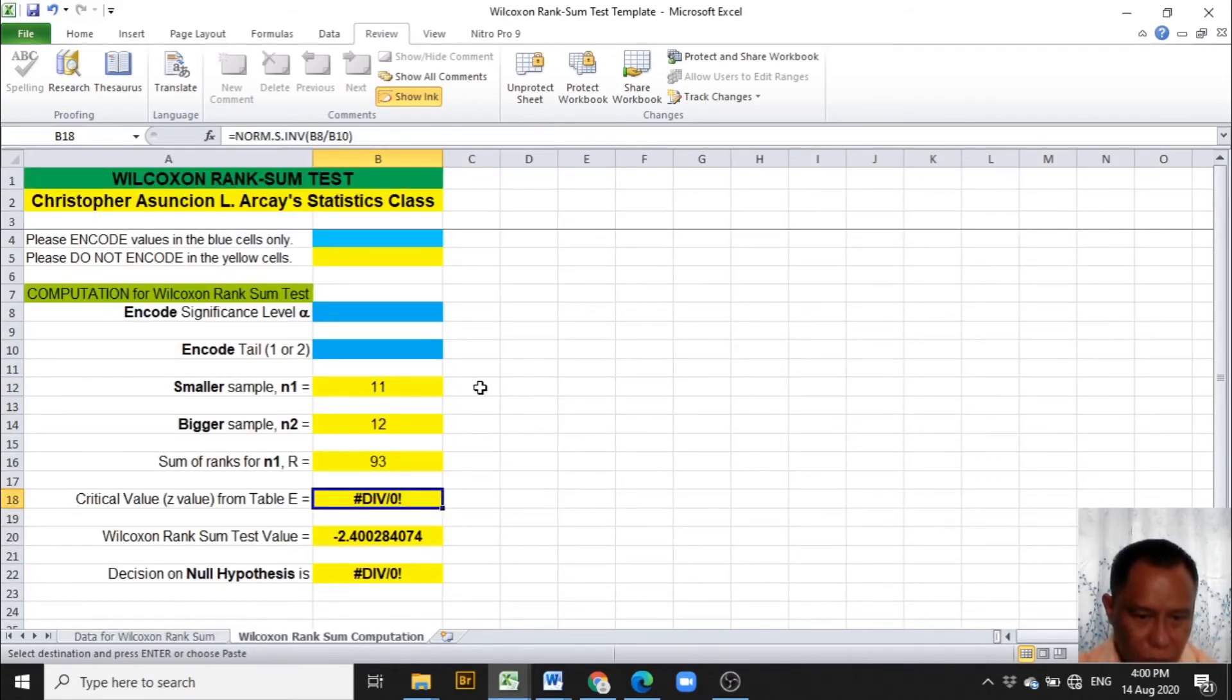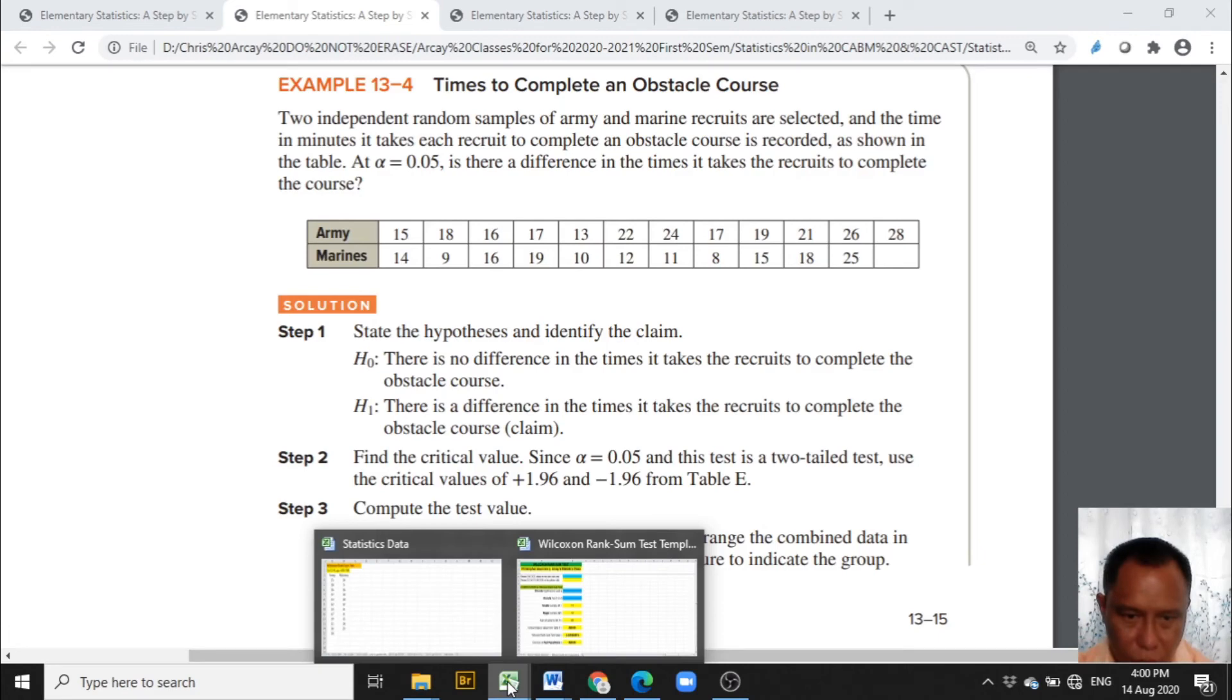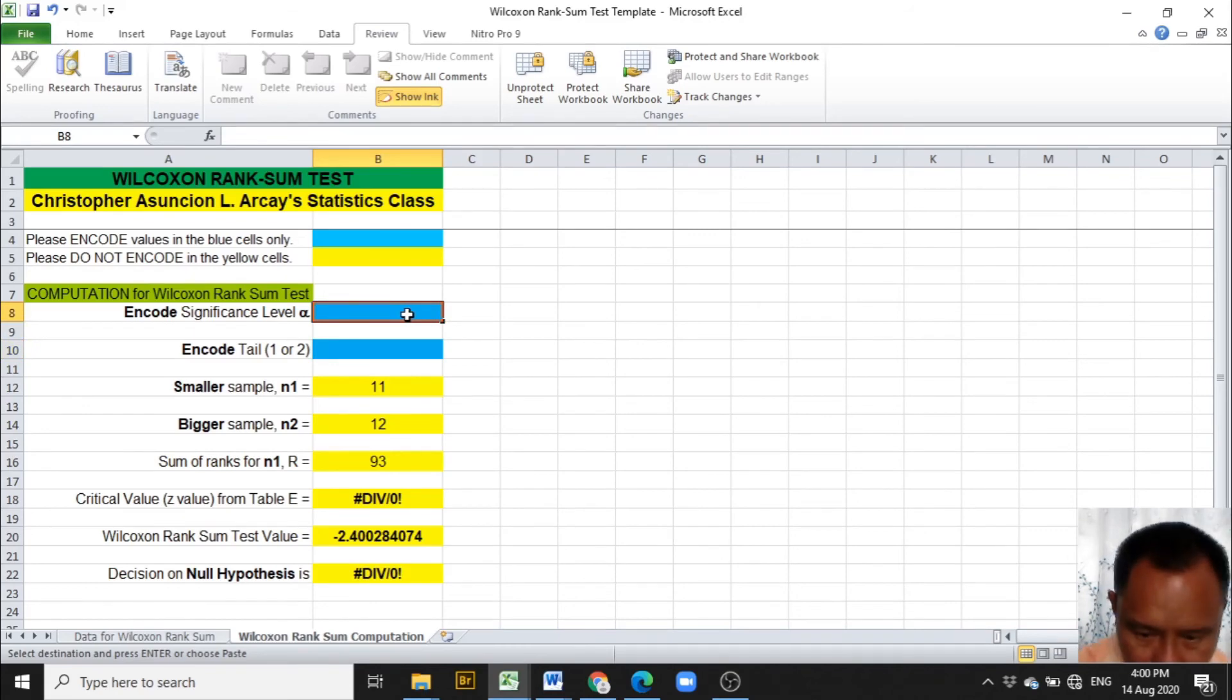In this worksheet, we need to encode the level of significance alpha and the tail from the problem. Going back to the problem, the alpha is 0.05. Now the tail is inferred from the question of whether there is a difference in the times it takes the recruits to complete the course, which means that the tail here is 2 because it does not give any direction of whether Army or Marine is lesser or bigger. So we encode 0.05 and the tail of 2.